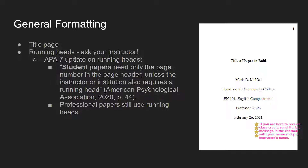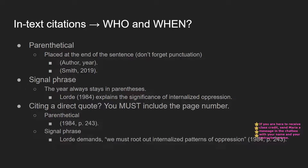Another thing with APA 7: it was published in 2020, and student papers no longer need running heads. Professional papers still use running heads, but that old requirement of a shortened title in the top left-hand corner of every page is no longer required for student papers. In this workshop I'm covering everything by the book — according to APA 7, the most updated standards.